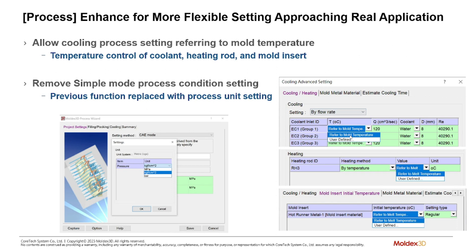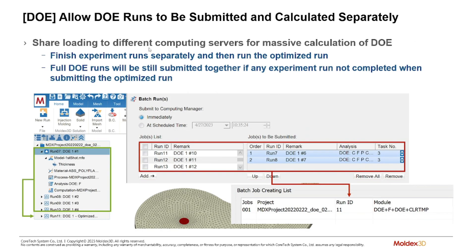The cooling channel temperature now has a couple of options — you can refer to the mold temperature instead of inputting it directly, or select user-defined to define it manually. You can also change units directly within the process wizard without going to preferences. The DOE function now allows you to separate your runs — for example, with eight runs, you can run four on one machine and four on another, splitting your calculation to reduce computation wait time.